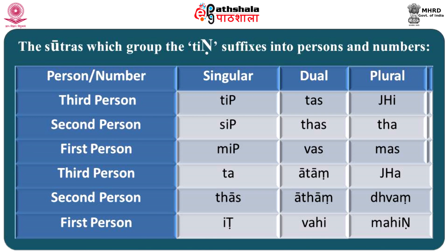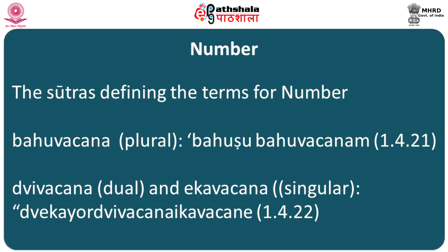The Atmanipada suffixes by person and number are: Third person: Ta, Atam, Jha. Second person: Thas, Atam, Bham. First person: Ip, Vai, Mahi. Sutra Bahusu Bahuvachana 1.4.21 defines Bahuvachana and states that it denotes plurality of units functioning as subjects or objects. Sutra Vekayur Divachanekavachane 1.4.22 defines Divachana and Ekavachana, stating that these terms respectively denote duality and singularity of units functioning as subjects and objects.